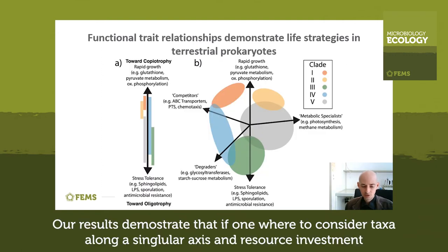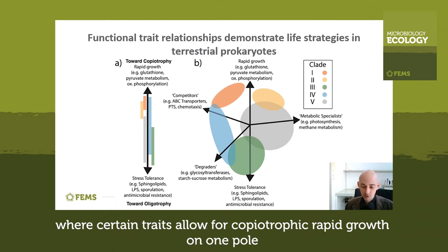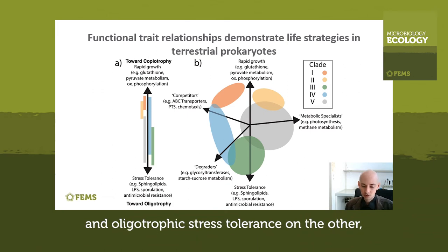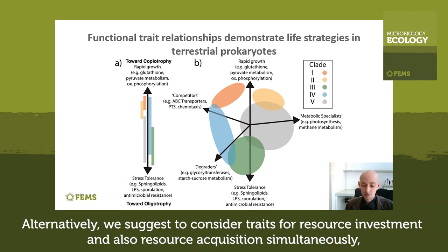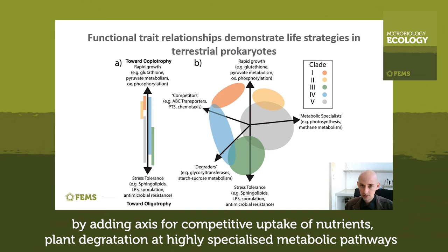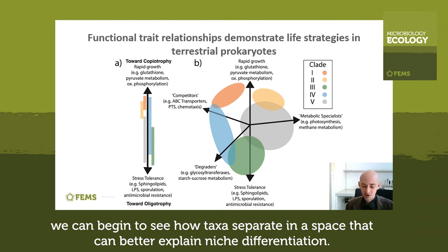Our results demonstrate that if one were to consider taxa along a singular axis of resource investment, where certain traits allow for copiotrophic rapid growth on one pole and oligotrophic stress tolerance on the other, that taxa overlap extensively. Alternatively, we suggest to consider traits for resource investment and also resource acquisition simultaneously. By adding axes for competitive uptake of nutrients, plant degradation, and highly specialized metabolic pathways, we can begin to see how taxa separate in a space that can better explain niche differentiation.